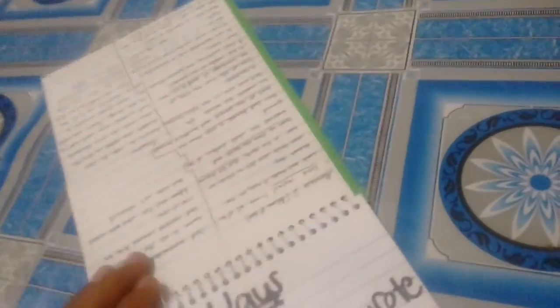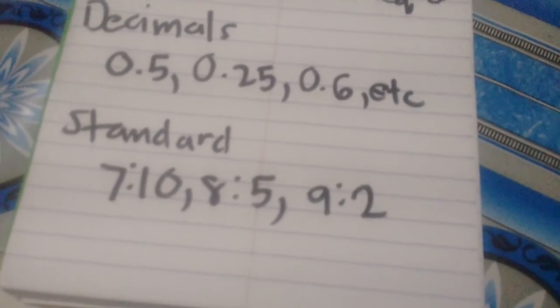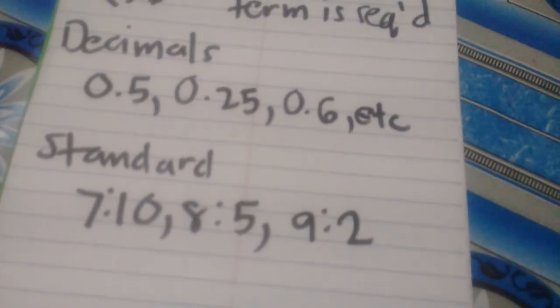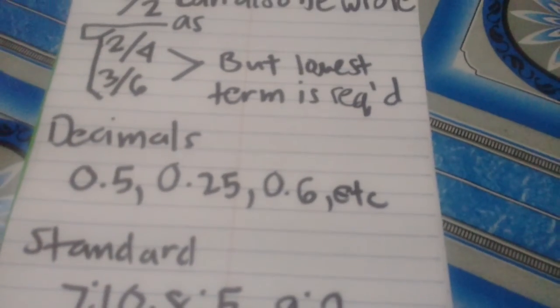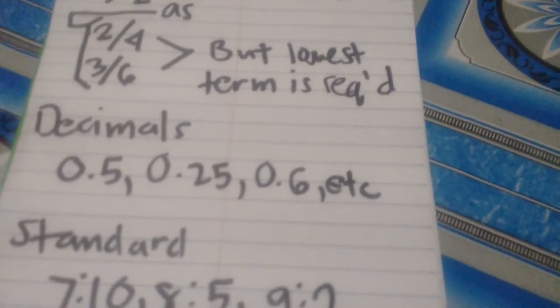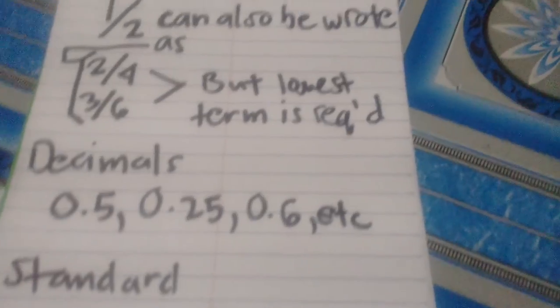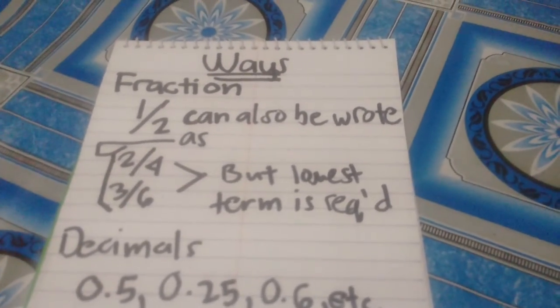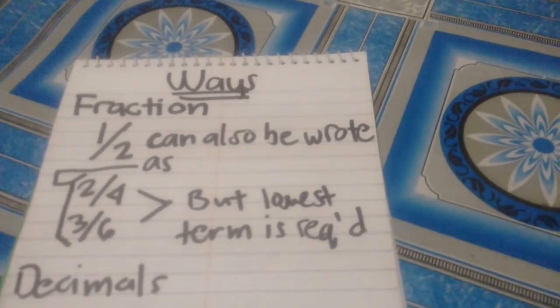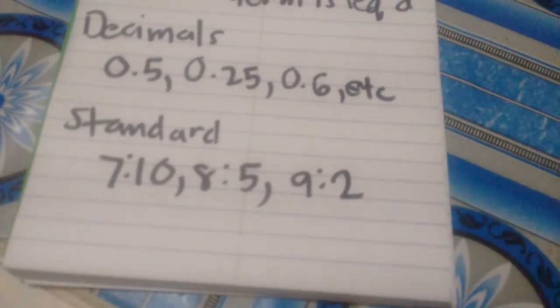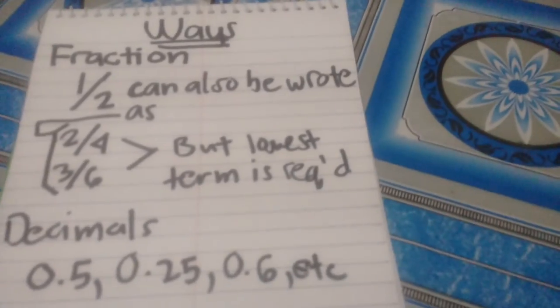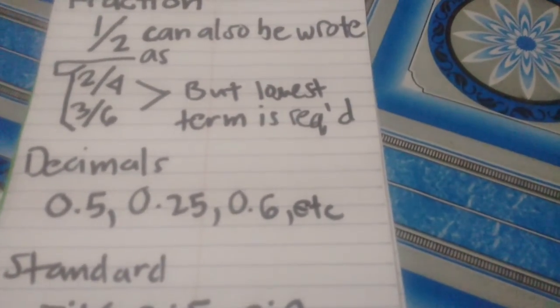Before we proceed to examples, let's first identify the ways to write a ratio. Number one is the standard form where you put two dots between two numbers. The second is the decimal form, which is later converted into fraction form. Fraction form is written with a straight line between the two numbers.